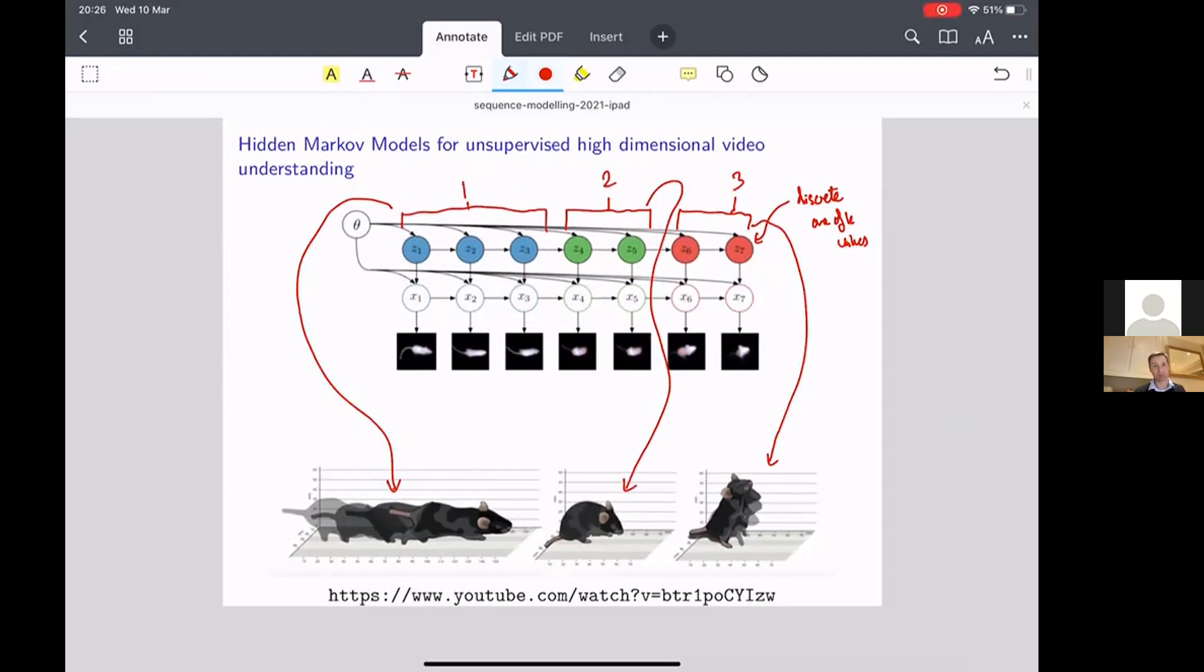And in general, you might want to have as many discrete settings K as there are different types of behavior. Now, of course, as we're undertaking each one of these activities, we're not static. We're moving around and that means these images from the depth camera, which is shown below here, are also going to change.